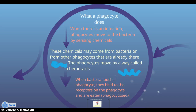What does a phagocyte do? When there is an infection, phagocytes move to the bacteria by sensing chemicals. These chemicals may come from bacteria or from other phagocytes that are already there. The phagocytes move by a process called chemotaxis.